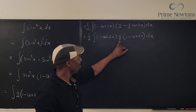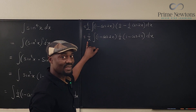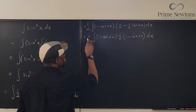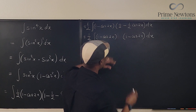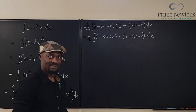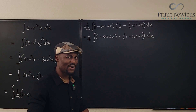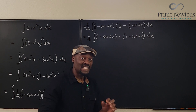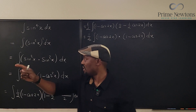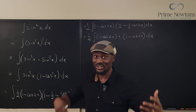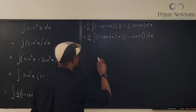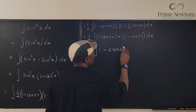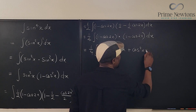We can move the ½ to the back, making it ¼ out front. Now, multiplying (1 − cos2x)(1 − cos2x) will generate a square again, but it's easier to deal with a square than a fourth power — so don't be afraid of it. Expanding gives us: 1 − 2cos2x + cos²2x. So we have (1/4) times the integral of (1 − 2cos2x + cos²2x) dx.